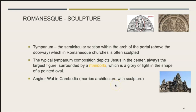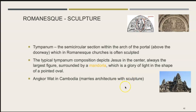Another thing to discuss is Romanesque sculpture. One key aspect is the tympanum — the semicircular section within the arch of the portal, above the doorway, which in Romanesque churches is often sculpted. The typical tympanum depicts Jesus in the center, always the largest figure, surrounded by what's called a mandorla — a glory of light in the shape of a pointed oval.